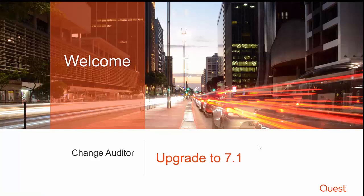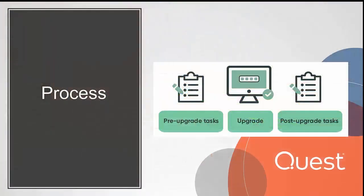In this video, we will see how to upgrade Change Auditor Platform to 7.1. The overall process of upgrade has been divided into three parts: pre-upgrade task, upgrade, and post-upgrade tasks. In the following slides, we will see each of these carefully.